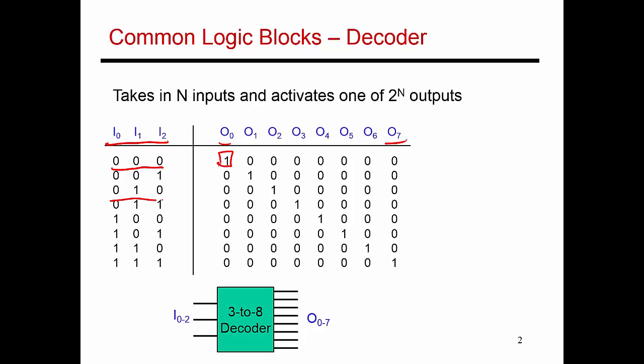If I give this as input, exactly one of the outputs is made high. The output that is made high, in this case O2, is denoted by the value of this code. This is the binary number 2, and so correspondingly O2 is made active. So why is this useful?